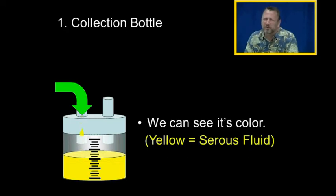It's also important to identify the color of the fluid coming from the chest tube. Here we have yellow fluid. That's serous fluid, as in serum of blood.